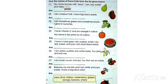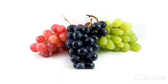Number 2: I am a brown fruit and I have big black seeds. The answer is chiku. Number 3: I am sometimes green and sometimes black. I grow in bunches. Grapes are of many colors. They are sweet and sour in taste.